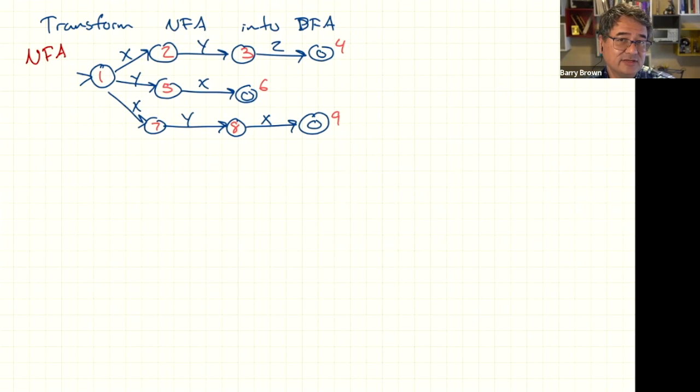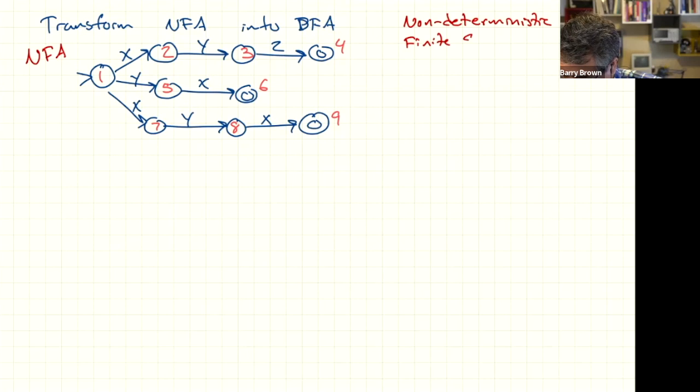You can draw a finite state machine that has some ambiguous choices in it. This was the one we drew a bit earlier, where that first state has two transitions labeled X. And this is called a non-deterministic finite state automaton, or NFA.